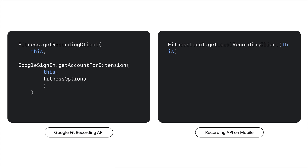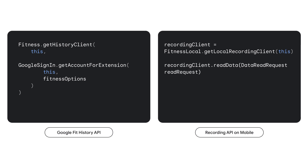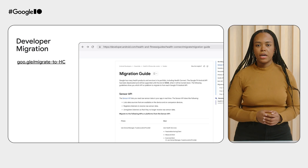The GetRecordingClient method changes to GetLocalRecordingClient and Google Sign-in is no longer needed. The History API functionality will merge with the Recording API and provide up to 10 days of local storage from which to read steps, distance, and calories. To read data from the local store, use the local Recording Client's ReadData method. Today, you can find updated documentation on developer.android.com to guide you through the migration process.